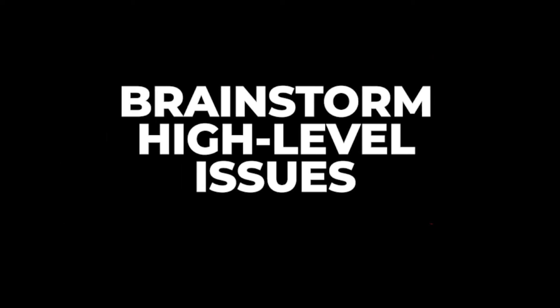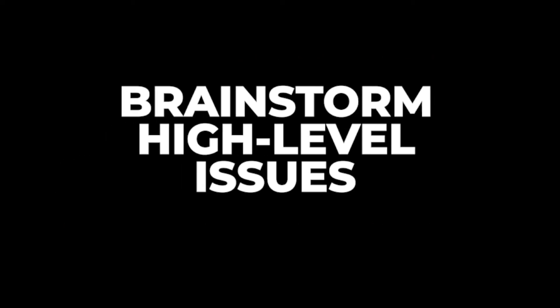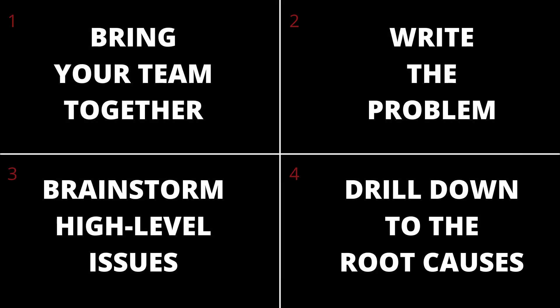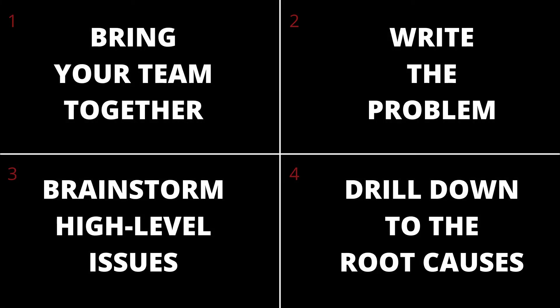Step three: brainstorm the high level issues. A high level approach ensures you don't miss important causes and prevents tunnel vision. Step four: drill down to the root causes — use a five whys analysis or a cause and effect diagram to analyze the problems. Steps one and two are essential and prepare for the brainstorm in steps three and four, where we spend more time figuring out what is at the root of our problem.